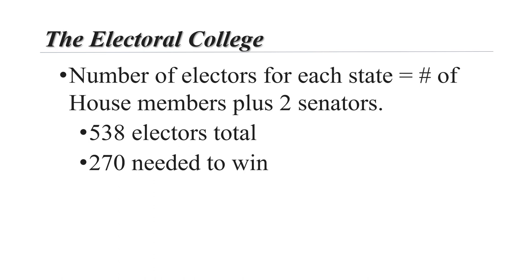With only two exceptions, each state awards all of its electors to the candidate who receives the most votes in that state. This makes it mathematically possible for a candidate who receives the most popular votes nationwide to fail to carry enough states for their electoral votes to add up to a majority. There has been an attempt, named the National Popular Vote Interstate Compact, to reform this system by awarding each state's electoral college votes to the candidate who wins the popular election. Whether or not the compact will actually be realized anytime soon is up for grabs.